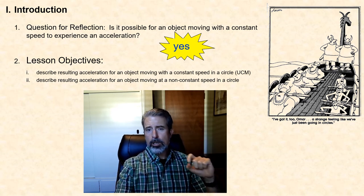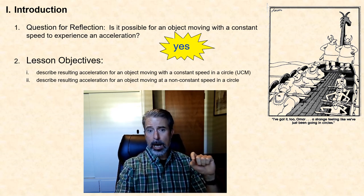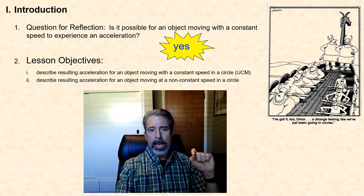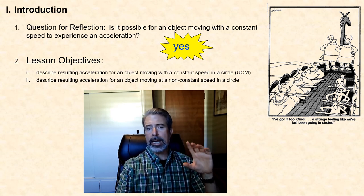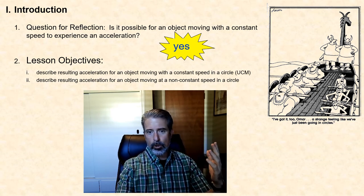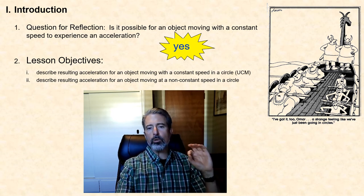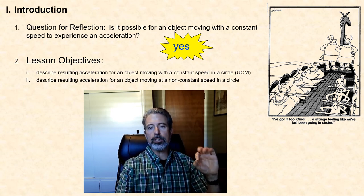After we talk about Newton's laws of motion, we'll return to the topic of circular motion and look at the dynamics of circular motion — that is, we will attempt to explain why objects move in circles, or said another way, what are the physical requirements to get objects to move in circular paths?